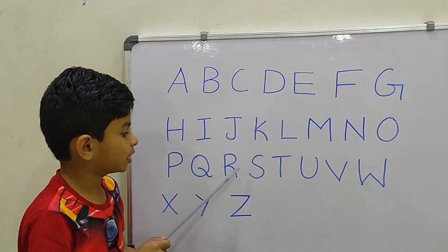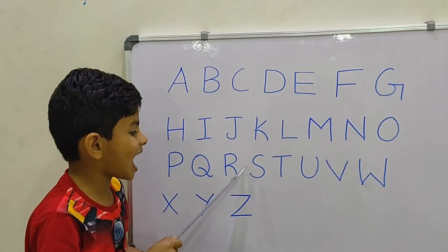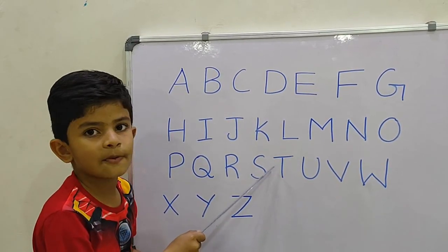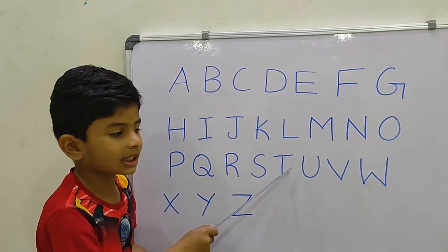Q. Q for queen. R. R for rat. S. S for sun. T. T for tiger.